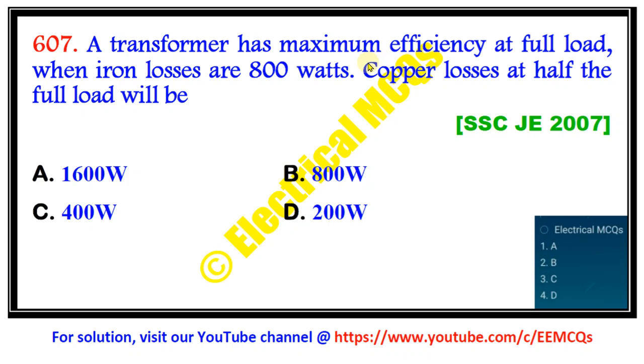Welcome students. We are going to solve question number 607. This question came in SSC Junior Engineer examination of 2007. The question is: A transformer has maximum efficiency at full load when iron losses are 800 watts.